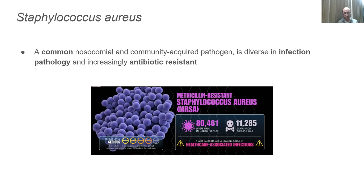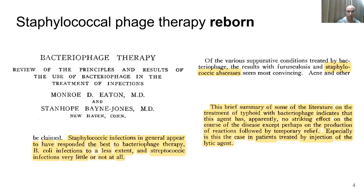S. aureus is diverse in its infection pathologies, infecting everything from skin and soft tissue to the heart and bloodstream. It's increasingly antibiotic-resistant, which is a major problem, and vaccine development efforts have failed because this organism has such an arsenal of ways to evade the immune system. Indeed, it will bind antibodies and point outward the variable segments, which otherwise would promote opsonization and digestion of these bacteria. All these problems make alternative therapies necessary.